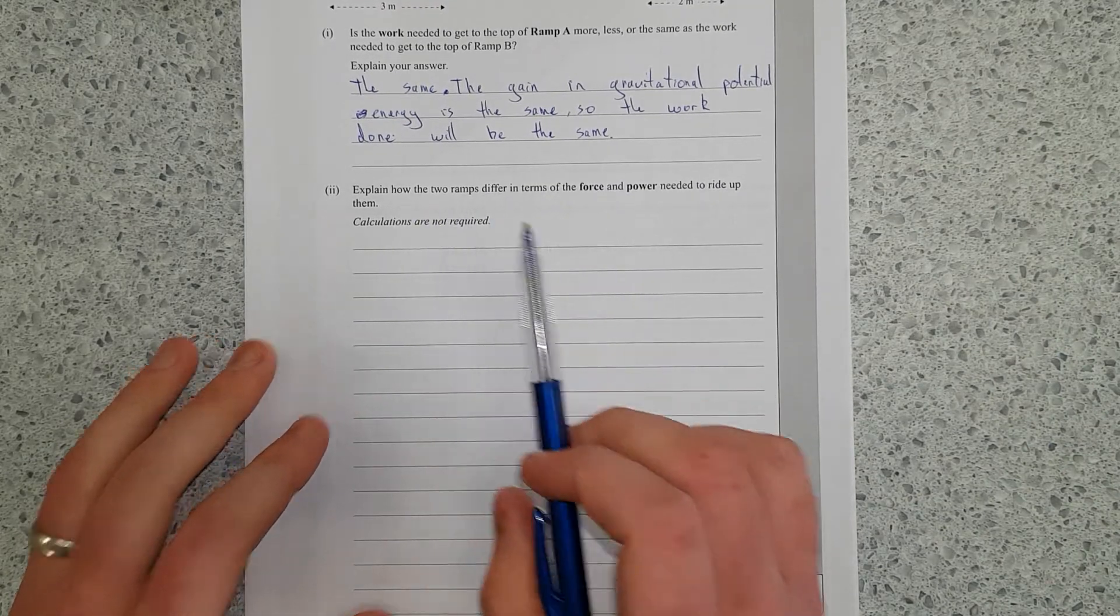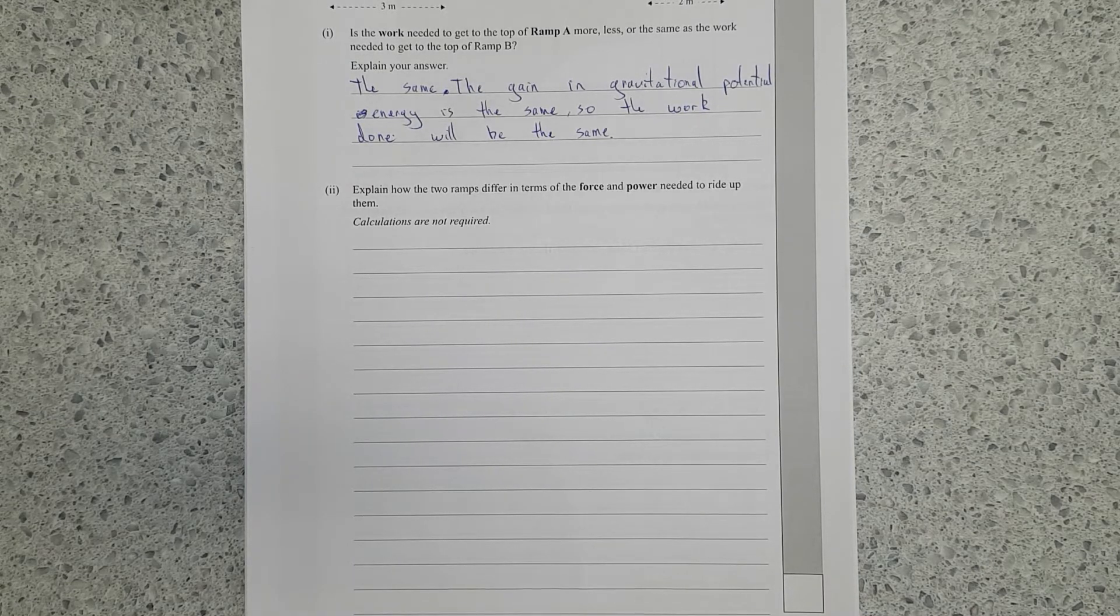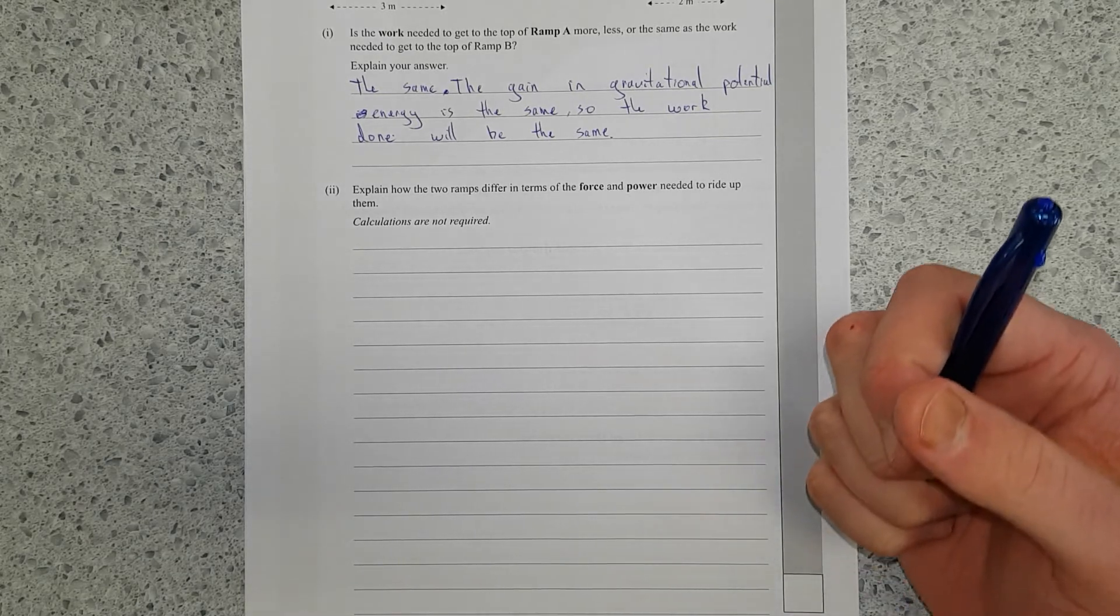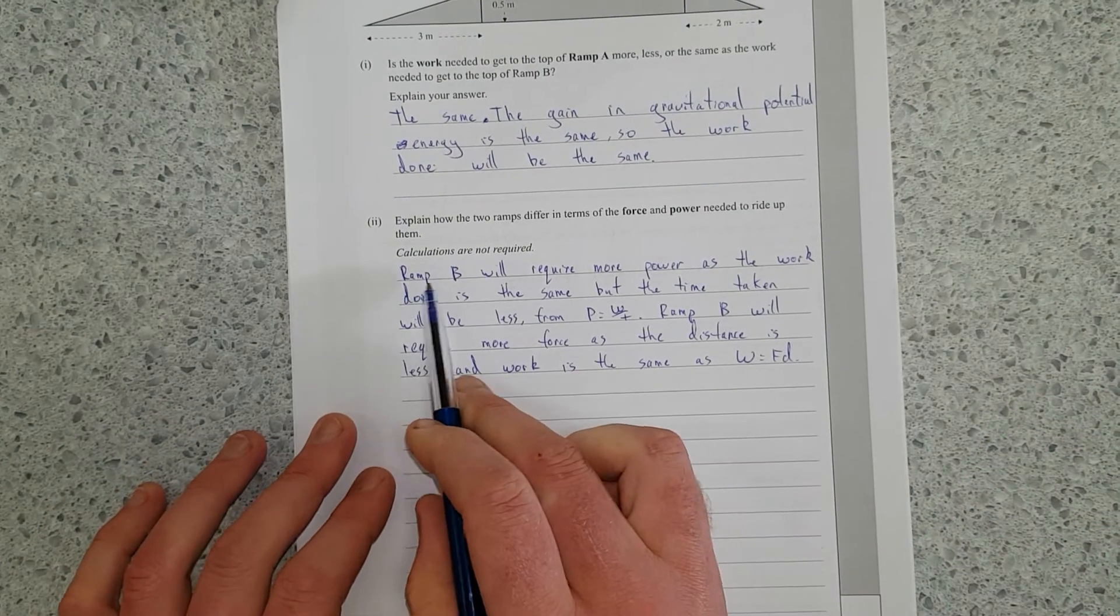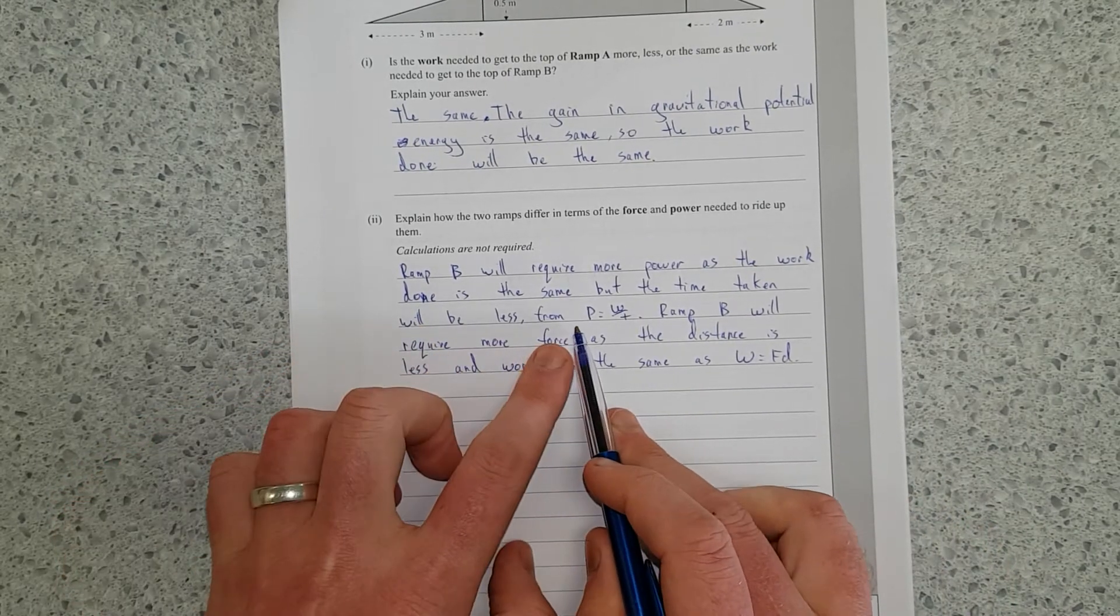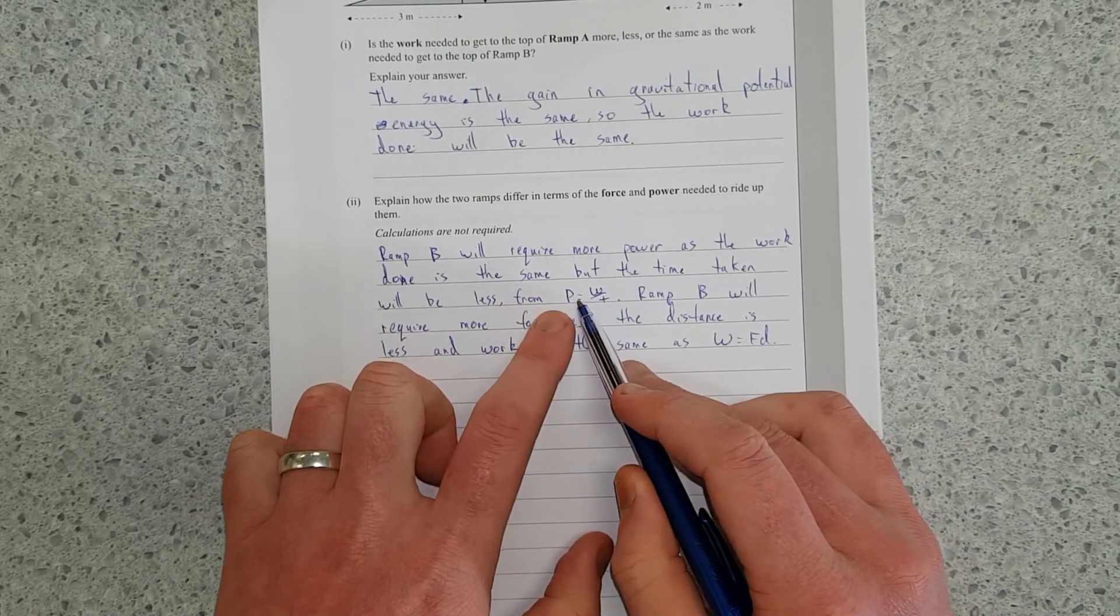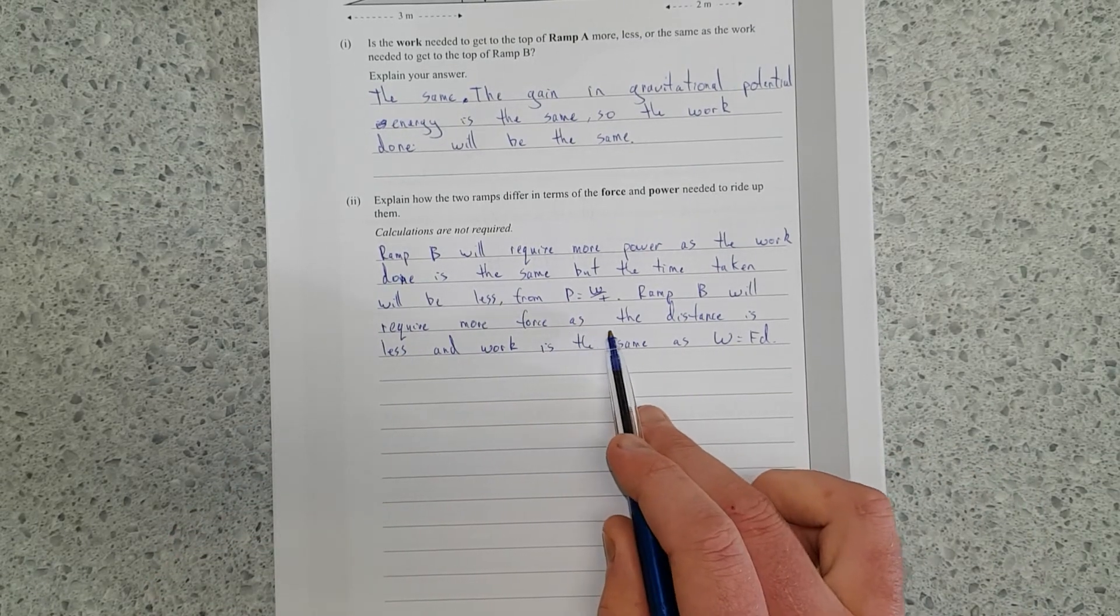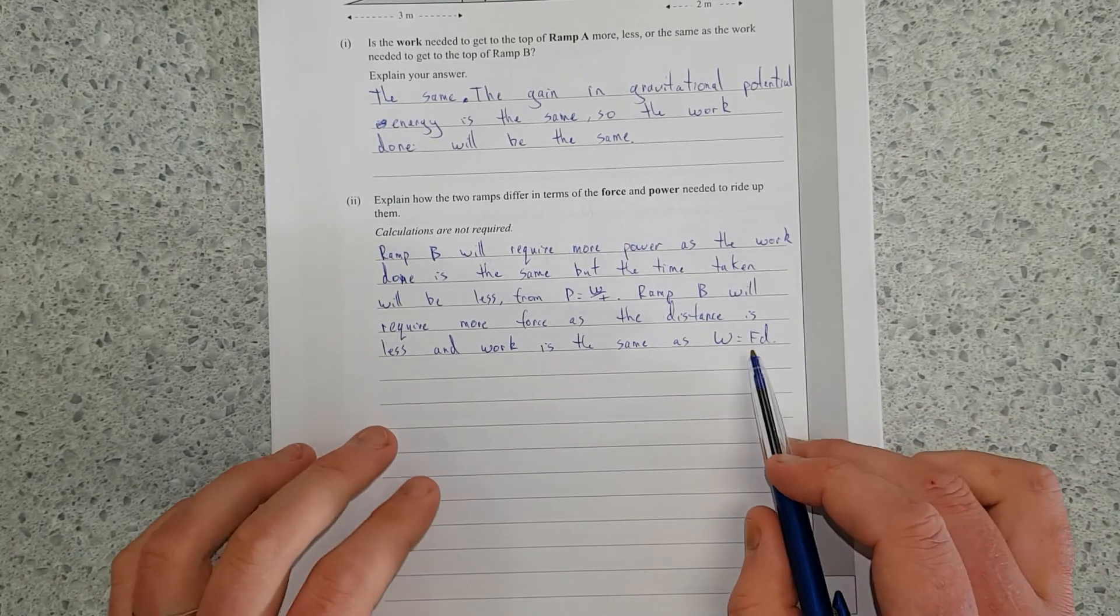So explain how two ramps differ in terms of force and power needed to ride up them. Calculations are not required. So basically it wants a written answer. Right, so I'll pause, I'll write the answer, then discuss. Right, so what I've said is ramp B will require more power as the work done is the same, but the time taken will be less, from power equals work over time. So this here is constant. If you decrease the time, it means you're going to increase your power needed.